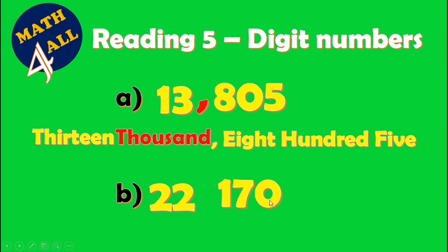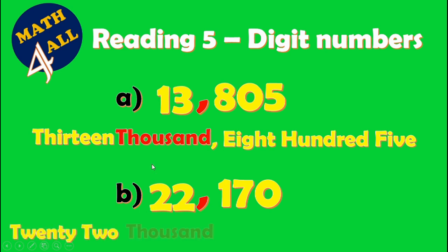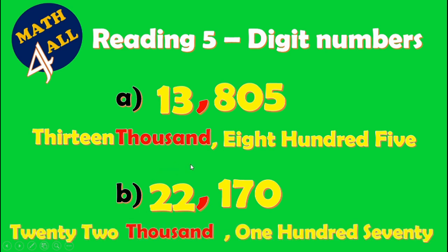Example B: here we have a five-digit number. Count three numbers from the right side and put a comma between them, then read from the left side. Here we have twenty-two thousand one hundred seventy.